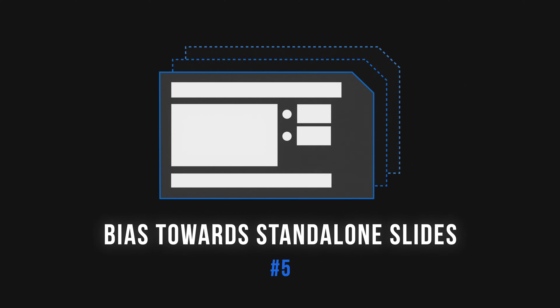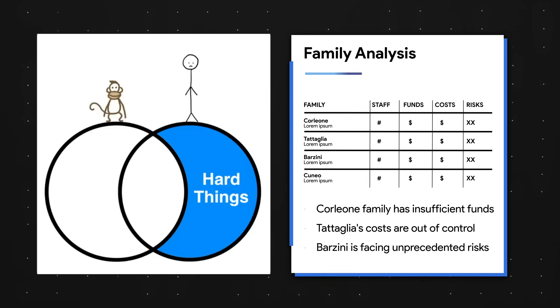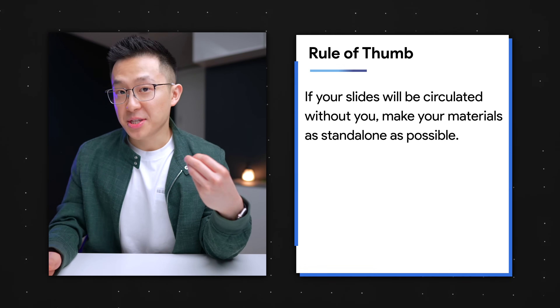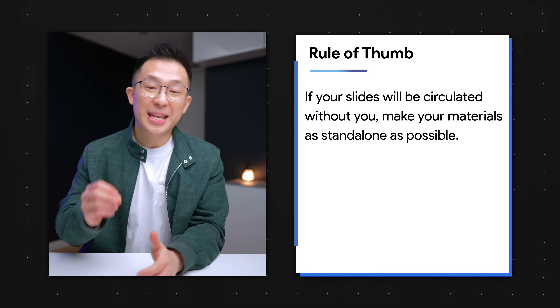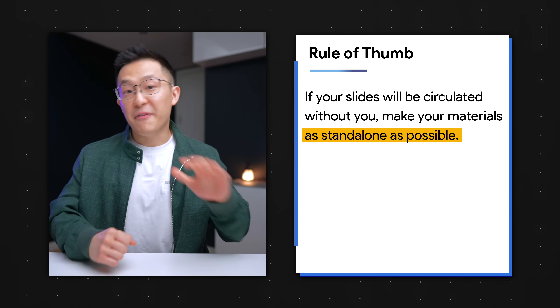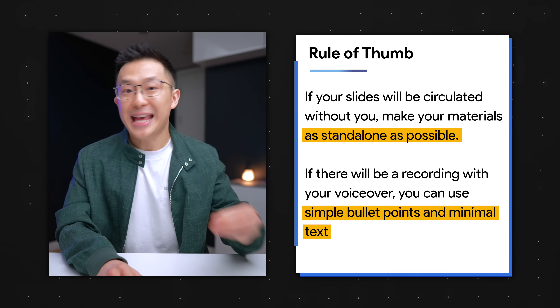The one exception where animations can elevate your slides is when you're presenting unilaterally — for example, in a town hall meeting where you have full control over the flow and no one will interrupt you. Tip number five: bias towards standalone slides. At work, you mainly see slides packed full of text and data. The rule of thumb is, if you plan to share your deck after the presentation — for example, in a follow-up email — assume your slides will be circulated without you, and bias towards making the materials as standalone as possible. If it's a low-stakes presentation or you know there'll be a recording with your voiceover, you can use simple bullet points and minimal text.